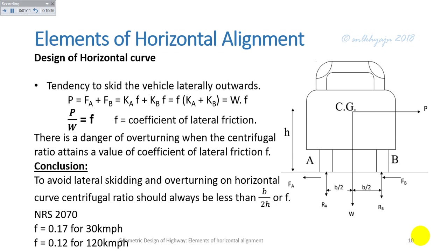As per Nepal Road Standard 2070, the centrifugal ratio should always be less than B/(2H) or f. The design speed used is 120 km/h with a coefficient of lateral friction of 0.124.